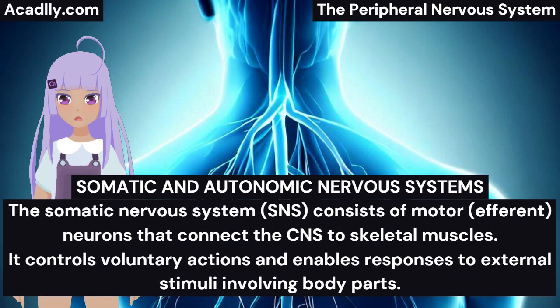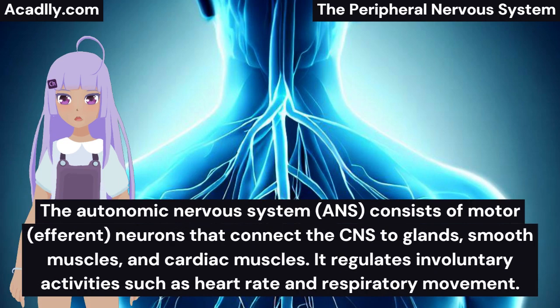The Somatic Nervous System (SNS) consists of motor (efferent) neurons that connect the CNS to skeletal muscles. It controls voluntary actions and enables responses to external stimuli involving body parts. The Autonomic Nervous System (ANS) consists of motor (efferent) neurons that connect the CNS to glands, smooth muscles, and cardiac muscles. It regulates involuntary activities such as heart rate and respiratory movement.